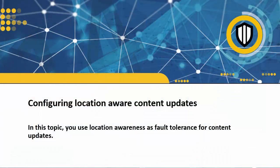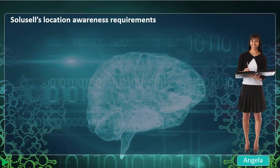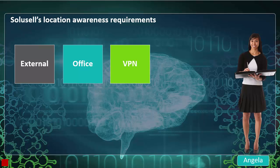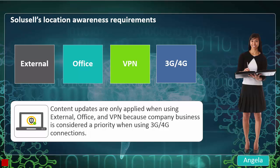The SEPM team is creating four locations for the SoluCell sales reps. External identifies when the laptop is outside the corporate network. Office determines when a SEPM client connects at the office and can resolve a specific set of DNS servers. VPN identifies when a SEPM client connects to the network from a remote location. Endpoints use the 3G/4G location when employees log on to a mobile hotspot for internet. Content updates are applied when using the first three locations because company business is considered a priority when using 3G and 4G connections.